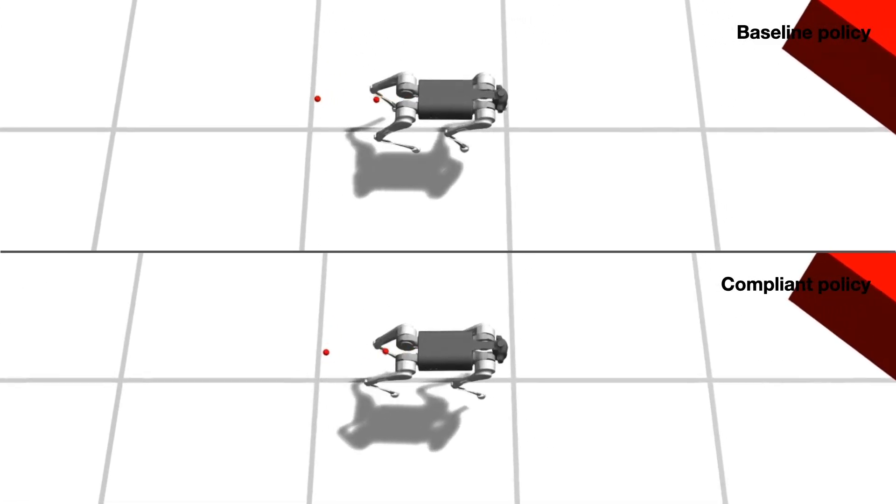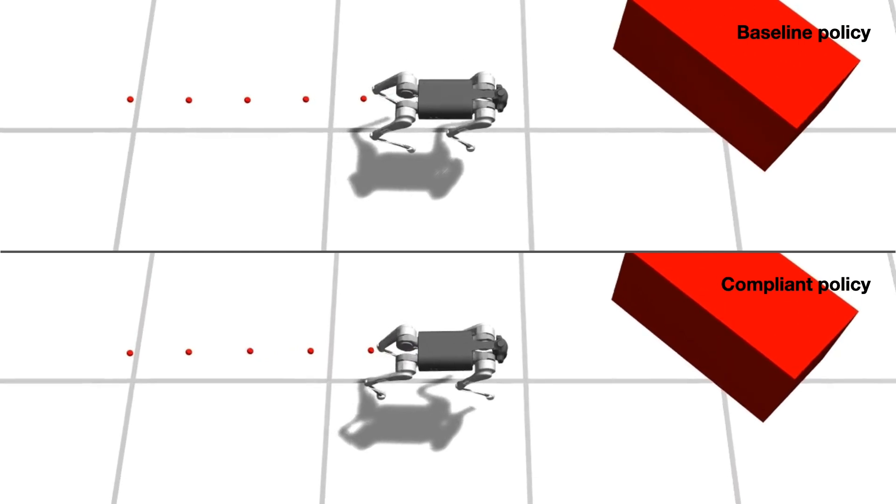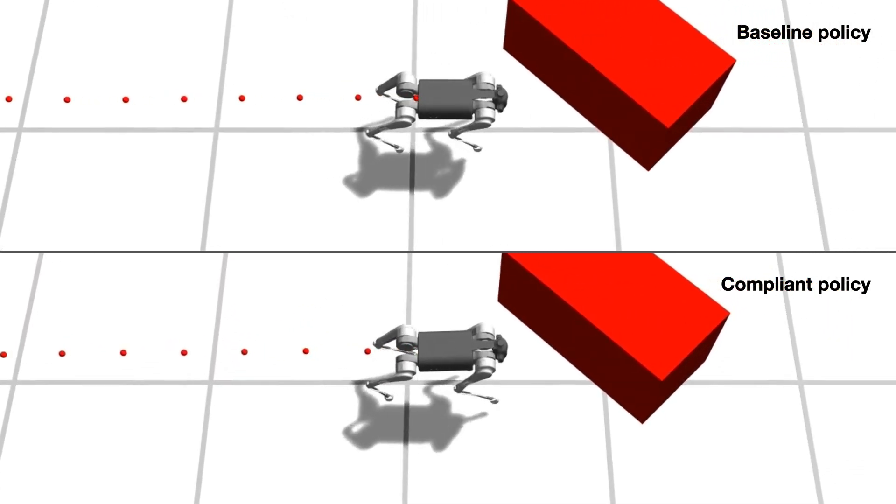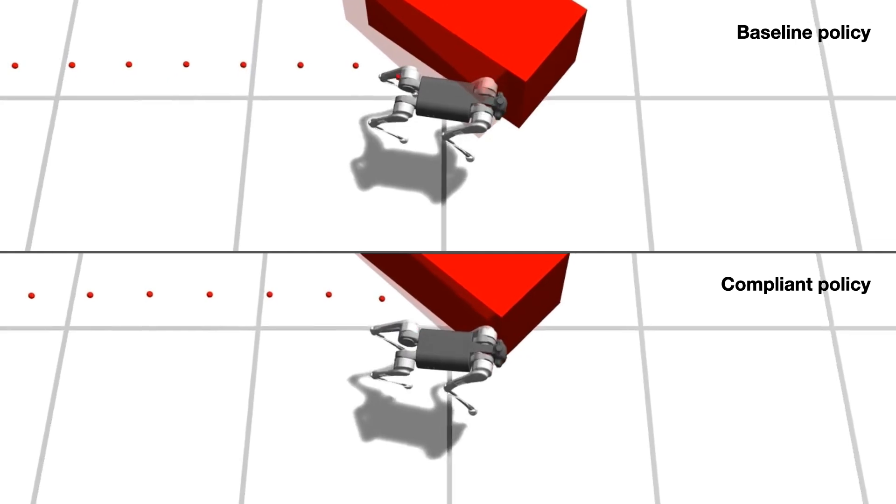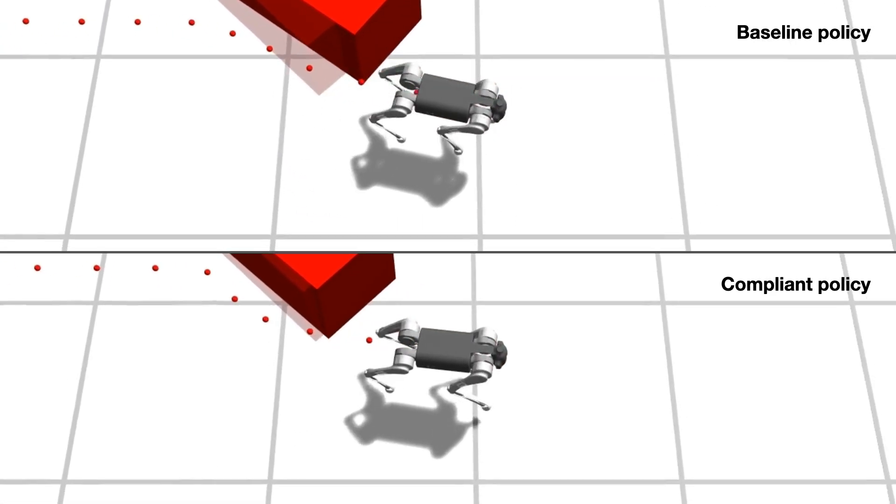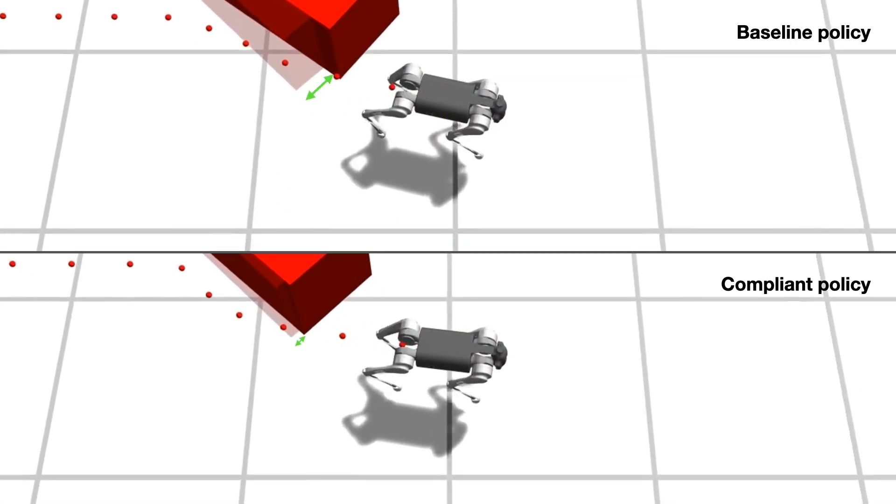To evaluate the safety aspect of controllers, we spawned a large box within the simulation for the robot to encounter via collision. Upon impact, the compliant policy enforces a milder force on the obstacle, effectively minimizing its progression in that direction.